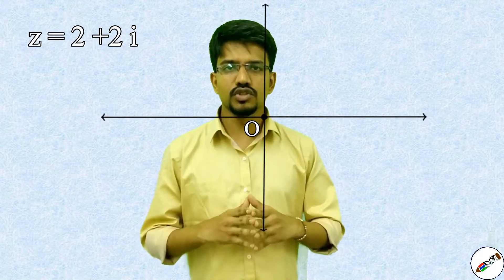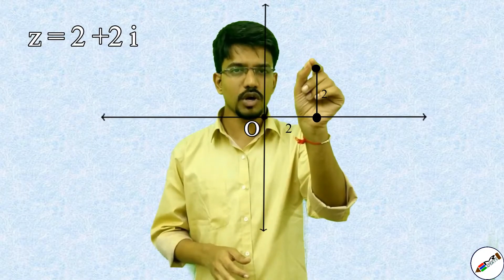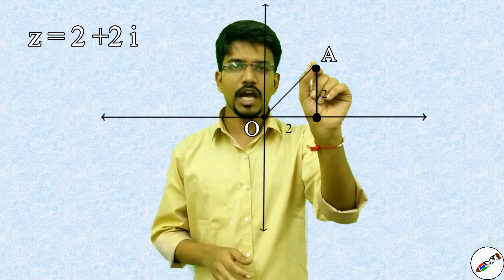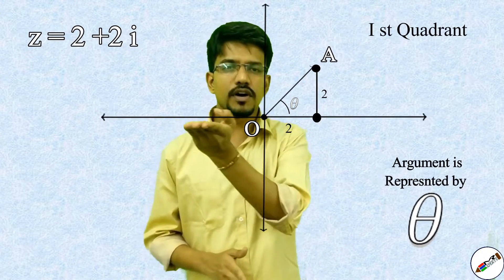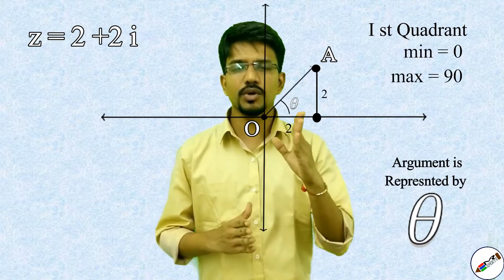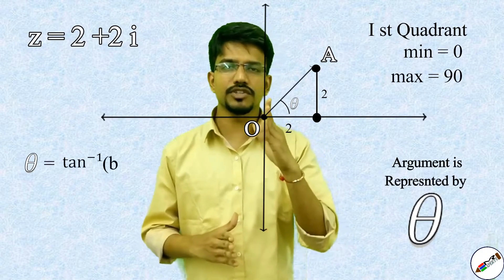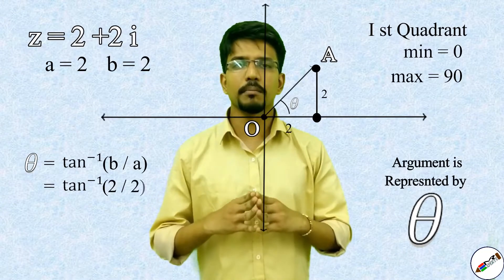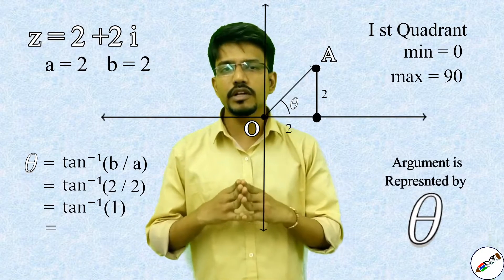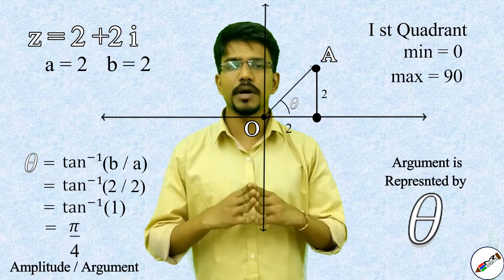Let us consider the complex number z equal to 2 plus 2i. Drawing it on the graph, we move 2 units on the real axis and 2 units on the imaginary axis — let us call this point A and draw OA. The angle made here is the argument of z. Since this complex number is in the first quadrant, the angle is between 0 and 90 degrees. Applying the formula, theta equals tan inverse of b by a, where b is 2 and a is 2, giving tan inverse of 1, which is 45 degrees or pi by 4 radians. Therefore, the amplitude or argument of z is pi by 4 radians.